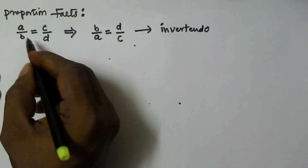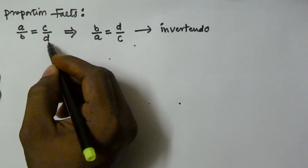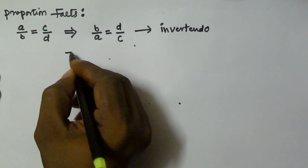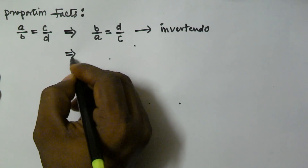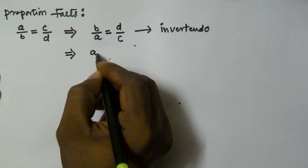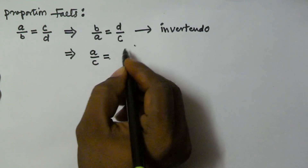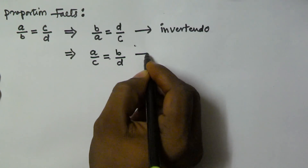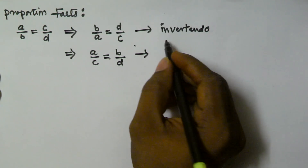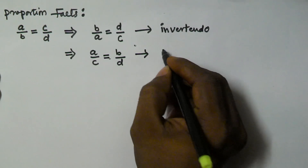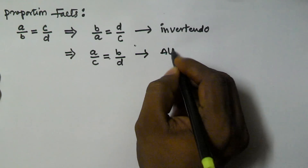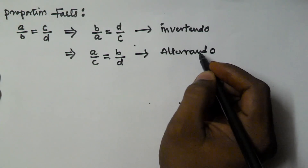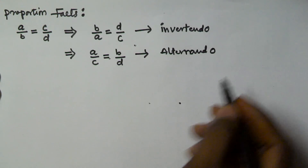So if we have A by B is equal to C by D, the same can also be written as A by C is equal to B by D. So this is called as alternendo.